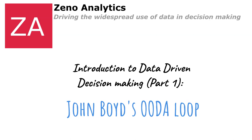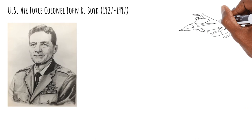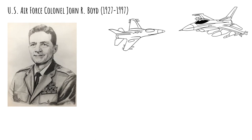This is Colonel John Boyd. John Boyd was an ace Air Force pilot. In the 50s he was widely seen as the best fighter pilot in the US Air Force. His work and research on maneuverability of fighter jets was critical to the redesign of the F-15 and the very successful design of the F-16. After his retirement from the Air Force in 1975, he started working on military strategy and decision-making, and came up with a model named the OODA loop.